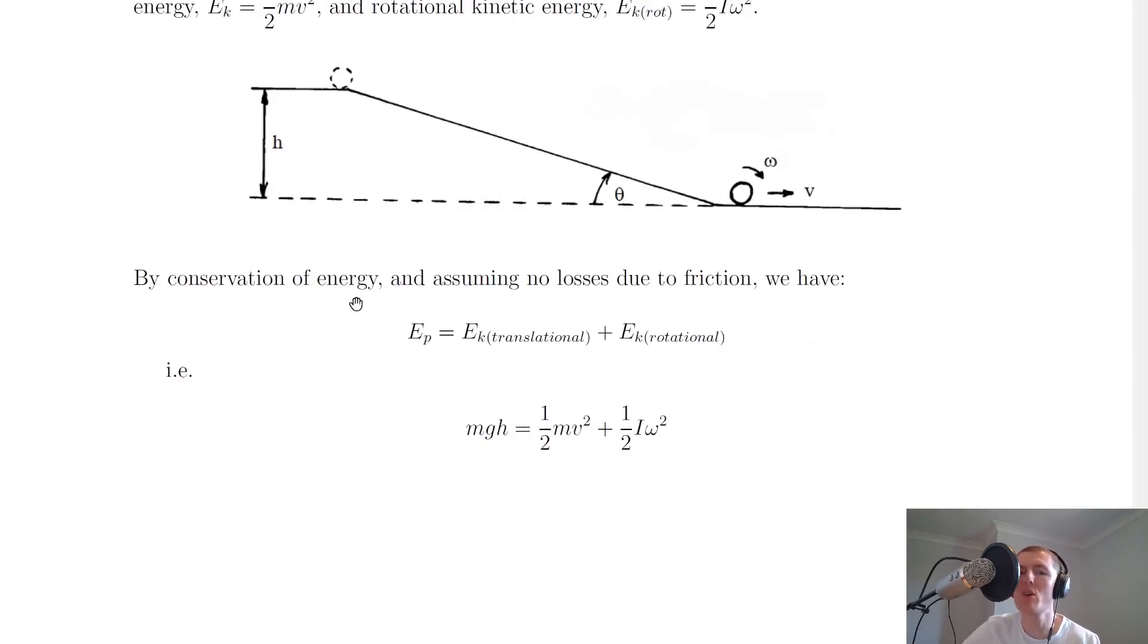So in this example it says by conservation of energy and assuming no losses due to friction, so assuming no energy loss due to heat and sound and so on, then we're saying that the gravitational potential energy of this object to begin with is going to be transformed into both the linear kinetic energy and the rotational kinetic energy.